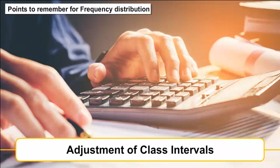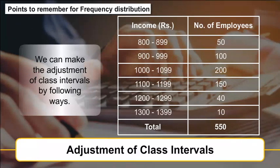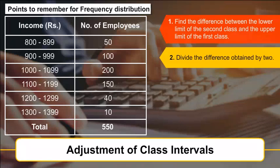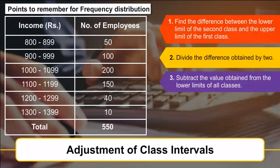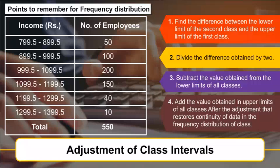Adjustment of class intervals: We can adjust class intervals by the following steps: 1. Find the difference between the lower limit of the second class and the upper limit of the first class. 2. Divide the difference by 2. 3. Subtract the value obtained from the lower limits of all classes. 4. Add the value to the upper limits of all classes. This adjustment restores continuity of data in the frequency distribution.